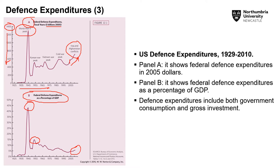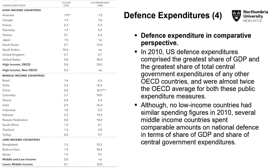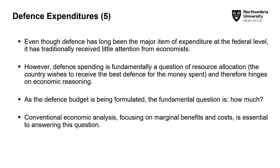These expenditures include both government consumption and gross investment in productive capacity. The United States spends 4.8 percent of total GDP on defense, translating to about 18 percent of government expenditure. In comparison, the United Kingdom spends about 2.7 percent — approximately 5.7 percent of total government expenditure. Saudi Arabia spends about 10.4 percent of GDP, but the US still spends more on defense than the next 19 countries collectively.